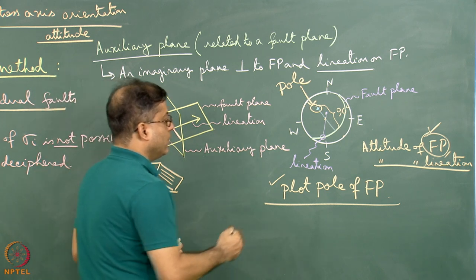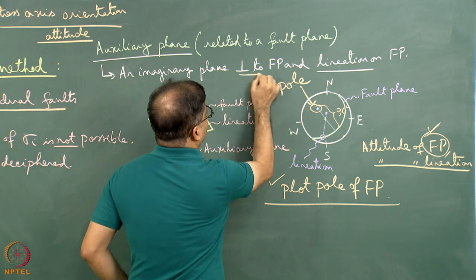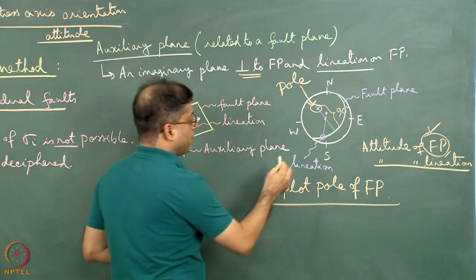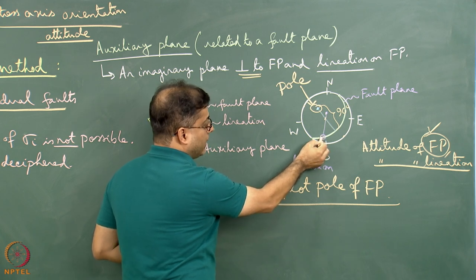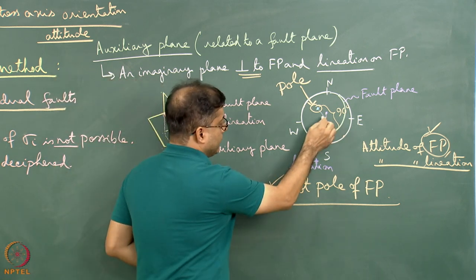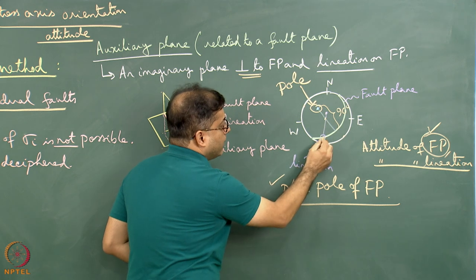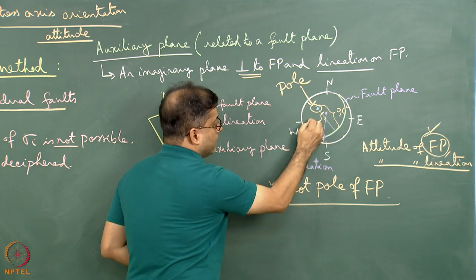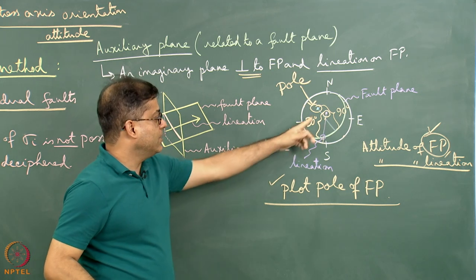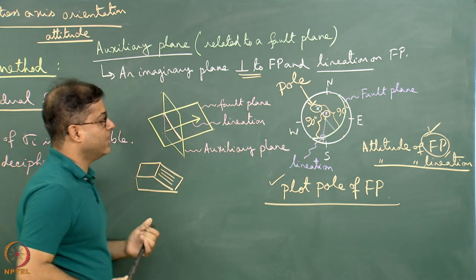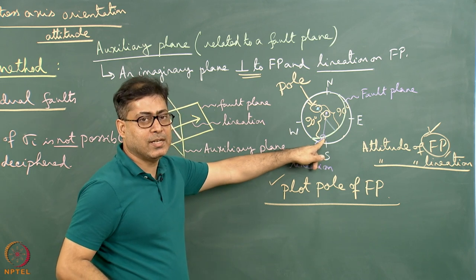Next, per the definition of the auxiliary plane, it is also perpendicular to the lineation. So from the lineation point, move 90 degrees along the line passing through the centre of the stereonet to get another plotted point. This second point represents a line at 90 degrees to the lineation on the fault plane.